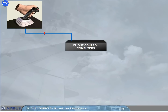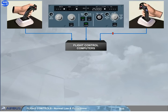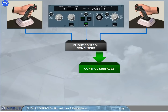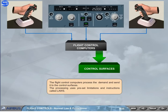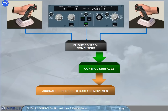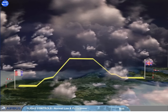A side stick or an autopilot sends a message to the flight control computers asking for an aircraft maneuver. The flight control computers process the demand and send it to the control surfaces. The processing uses preset limitations and instructions called laws. The aircraft responds conventionally to the movement of control surfaces. In normal law, pitch and lateral controls are modified depending on the phase of flight, and they operate in three modes.